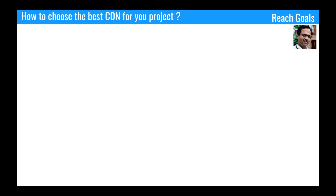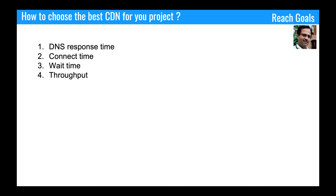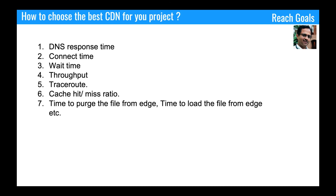Now let's say you have an opportunity to implement CDN in your project. Here are the things to consider when evaluating a CDN. You need to understand the KPIs used to compare multiple CDNs. The top industry-standard KPIs for choosing a CDN are: DNS response time, connection time, wait time, throughput, trace route of your application, cache hit and miss ratio, time to purge a file from the cache, and time to load a file from the cache.